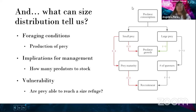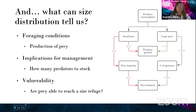What can size distribution tell us? It could indicate foraging conditions between Lake Michigan and Lake Huron, and the production of prey. Based on a conceptual diagram of predator consumption: if predators only consume large prey items, this maximizes their growth but may decrease the amount of spawners and thus decrease recruitment. However, if they only eat small prey items, their growth is not maximized and prey will never reach maturity. This has implications for management — for example, how many predators should be stocked — and may indicate the vulnerability of prey and whether they can reach a size refuge.